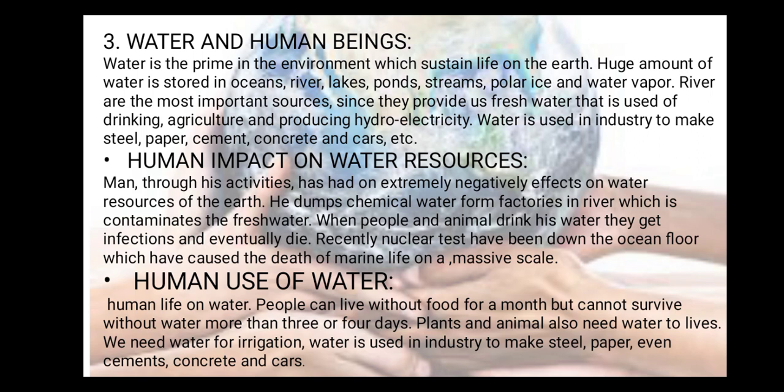Human use of water: people can live without food for about a month, but cannot survive without water for more than 3 or 4 days. Plants and animals also need water to live. We need water for irrigation, and it is used in industry to make steel, paper, cement, and cars. Water is essential for drinking, washing, cleaning, and every aspect of daily life.